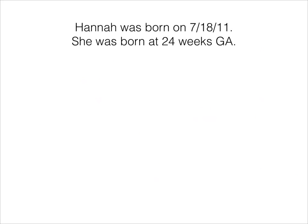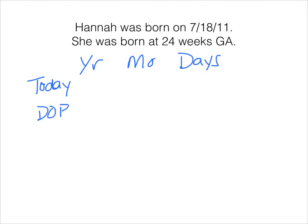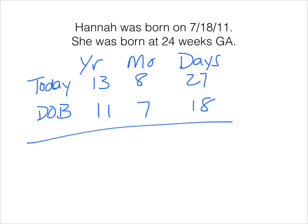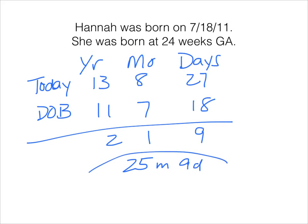Our final example is for Hannah. Hannah was born on July 18th, 2011, and was born at 24 weeks gestational age. Setting up the grid: today is 2013, 8, 27, and Hannah's date of birth is 2011, 7, 18. So 27 minus 18 is 9, 8 minus 7 is 1, 13 minus 11 is 2. Hannah is 2 years, 1 month, and 9 days — that's 25 months and 9 days old. We stop here because even though she was born quite prematurely, she is over 24 months old. So we don't correct for prematurity in this instance, and we assess Hannah as though she were a 25-month-old.